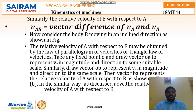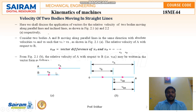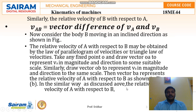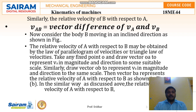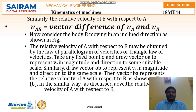Similarly, the relative velocity of B with respect to A: vector V_BA equals the vector difference of Vb and Va. Now consider body B moving in an inclined direction as shown in the figure. The relative velocity of A with respect to B may be obtained by the law of parallelogram of velocities or the law of triangle of velocities.